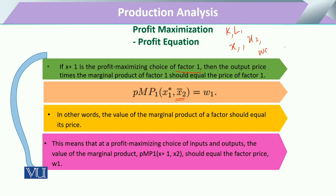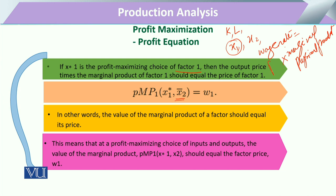The wage rate will be equal to the marginal physical product produced by the utilization of input x1, multiplied by the market price of the quantity that has been produced.